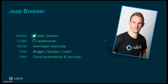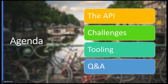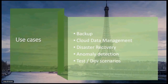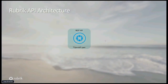I'm a developer advocate. I work for a company called Lubick — we are in the backup and cloud data management sphere. Today I'm going to cover what kind of API we are working with, what kind of challenges we get into, how we solve these challenges using tooling, and then we'll leave some time for Q&A. The use case for our API is backup, cloud data management, disaster recovery, and anomaly detection.